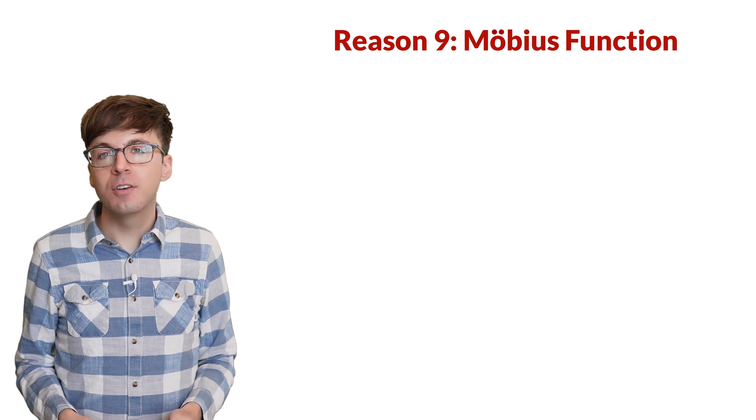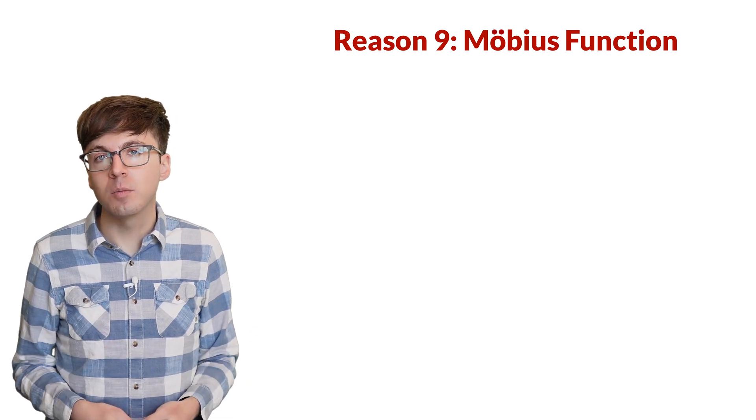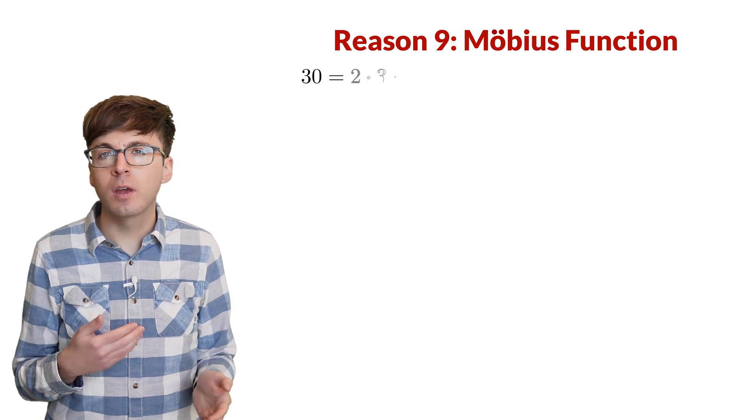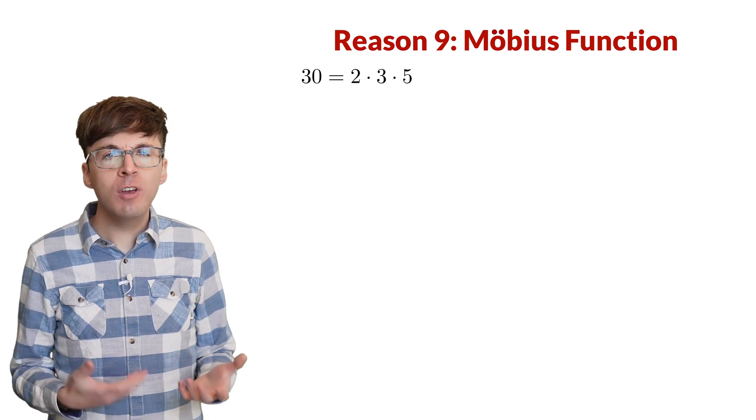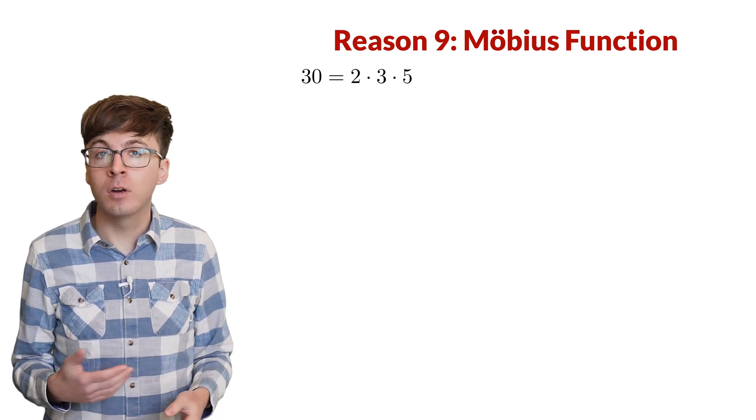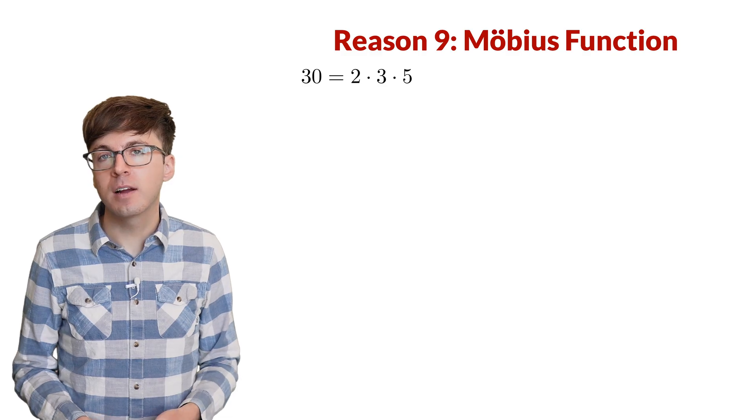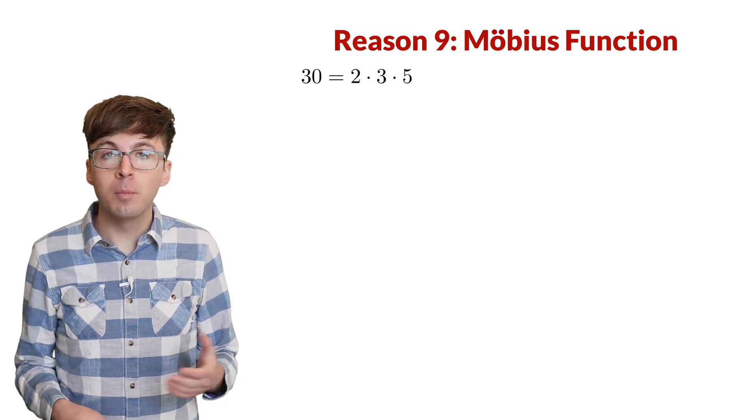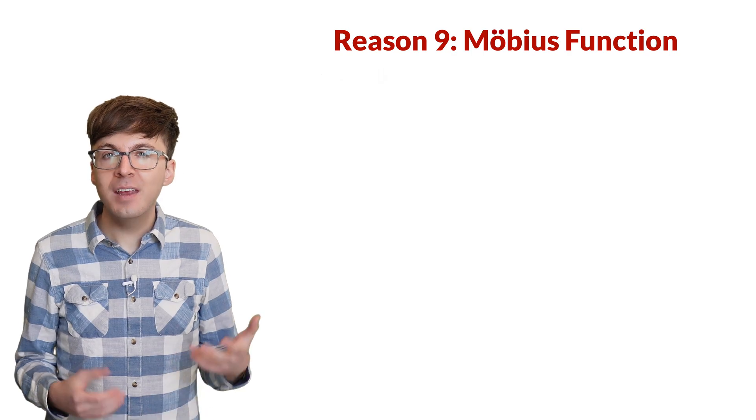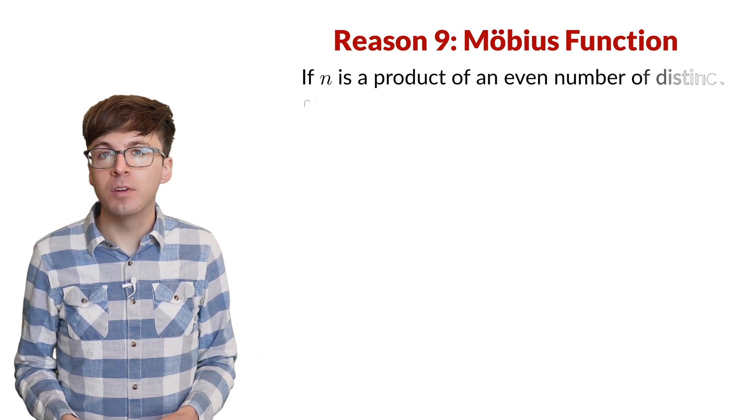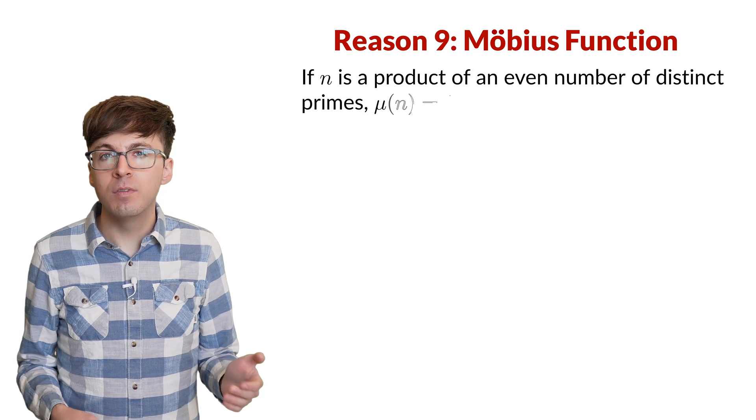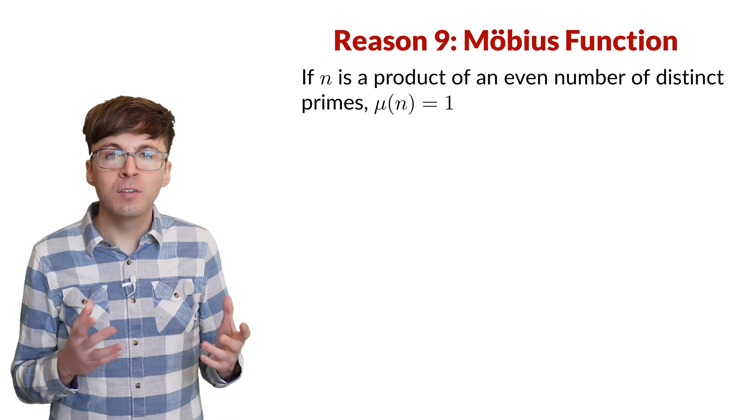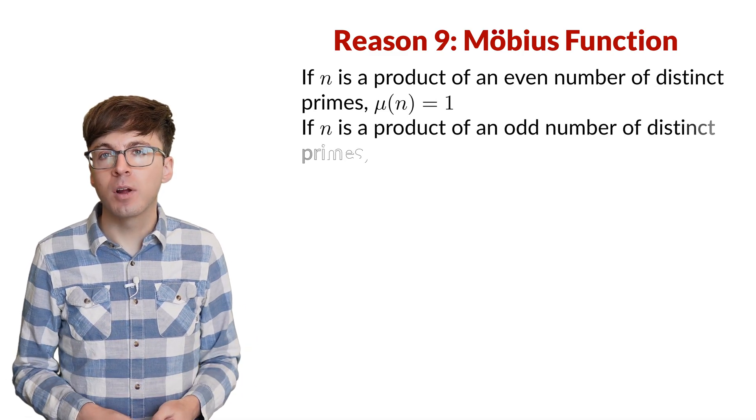Reason 9. Integers have unique factorizations into a product of primes. Like 30 is 2 times 3 times 5. So we can check if an integer has an even or an odd number of distinct prime factors. This allows us to define the Mobius function, which we'll call mu. If n is the product of an even number of distinct prime factors, then mu of n equals 1. If n is the product of an odd number of distinct prime factors, then mu of n is negative 1.